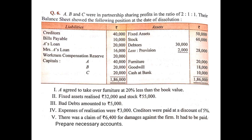These will be shown on the debit side of the realization account: to bank account (bills payable paid) 10,000, and to bank account (Mrs. A's loan paid) 16,000. If you wish, you can show all payments together — write to bank, show the total in the amount column, and in the inner column show individual amounts: creditors paid, bills payable paid, Mrs. A's loan paid, claim for damages paid, realization expenses paid. Similarly for assets realized.